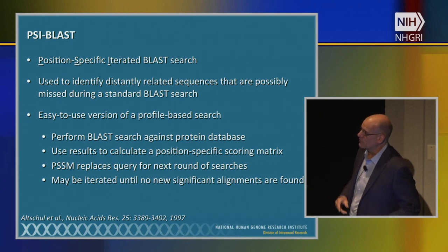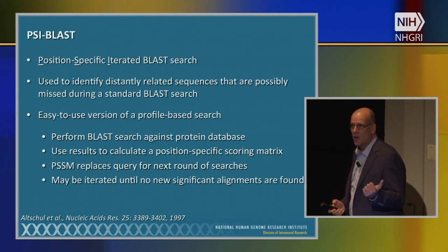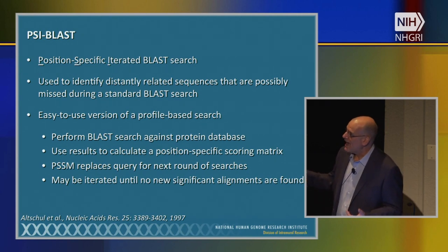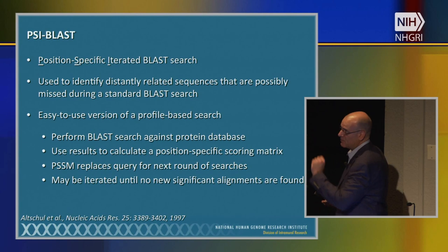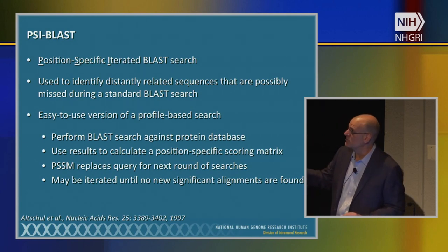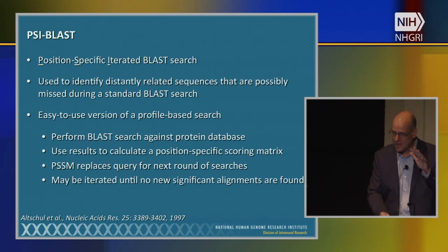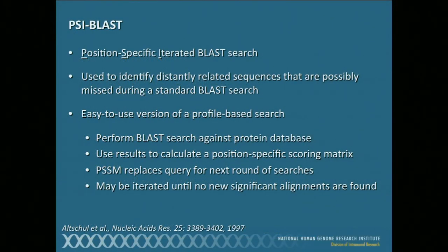PSI-BLAST is a very easy-to-use method. You start with your sequence of interest and run a regular BLAST-P search. Once you have those results, PSI-BLAST calculates a position-specific scoring matrix based on all the sequences found — it makes the hit list, the multiple sequence alignment, and the numerical matrix. Once calculated, the matrix replaces the query for the next round of searches. Your original query sequence basically gets thrown out at this point, and we use just the matrix for successive rounds until no new significant alignments are found.